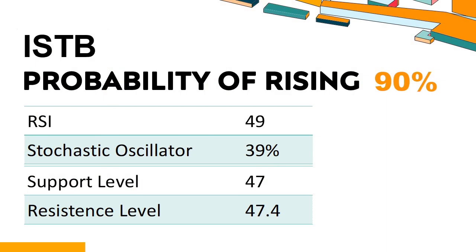What are the key technical signals for ISTB performance? Technical Signals and Analysis: ISTB's 14-Day Relative Strength Index (RSI) value was 49. When the RSI is above 25 and below 50, it generally indicates that the stock is moderately bearish.